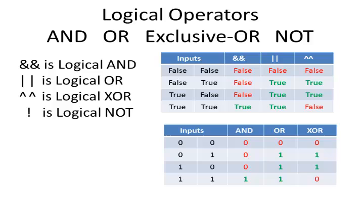Sometimes truth tables are represented with zeros and ones instead of trues and falses. So a zero represents a false, and a one represents a true. It might be a little easier to see these with zeros and ones.